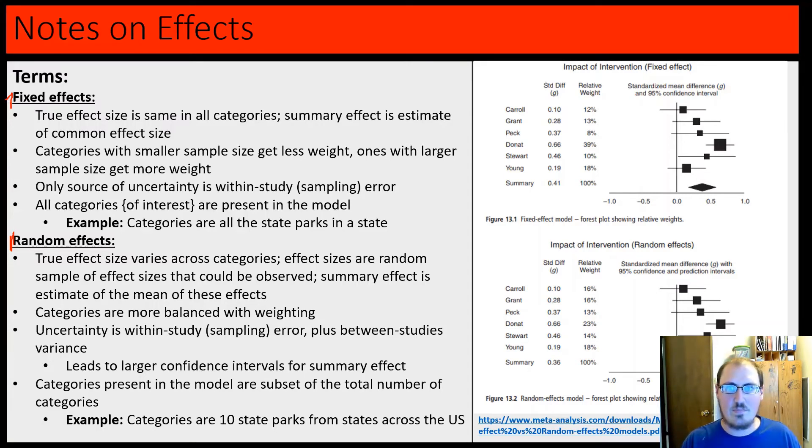Fixed effects include all categories of interest, like all the state parks in a state, while random effects are a subset of all possible categories, like 10 state parks from all the state parks across the US. So, fixed and random effects behave differently in models, and different variables will be either fixed or random. Typically, fixed effects are effects we care about, or random effects may be less things we care about, and more factors that we want to control for.